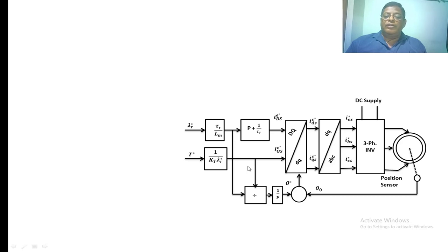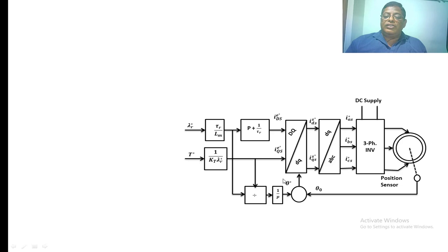These two inputs, when divided and multiplied by 1/p, give theta_star, which is added to theta_naught provided by the position sensor attached to the rotor of the induction motor. This angle is used to convert the d-q values from the excitation frame to the stator frame, giving i_ds_s_star and i_qs_s_star. These are then converted into the abc frame.